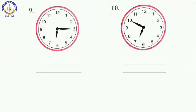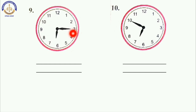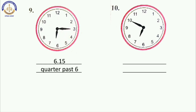The ninth one: the minute hand is on 3 and the hour hand is between 6 and 7. So the time is 6:15. In words we write quarter past 6. Remember: 15 minutes is equal to quarter.